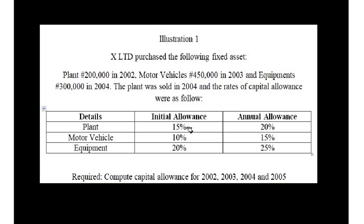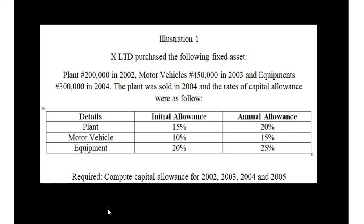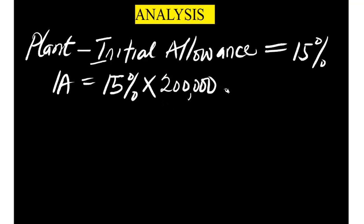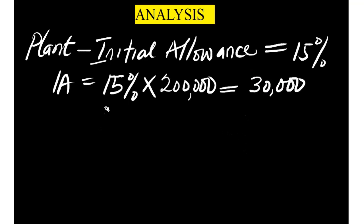We are going to calculate the initial allowance for plant. Plant's initial allowance rate is 15%. Initial allowance equals 15% multiplied by the cost of the asset. The plant was purchased for 200,000, so we multiply 0.15 by 200,000. That gives us an initial allowance of 30,000.